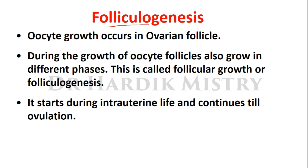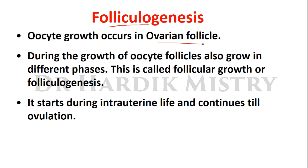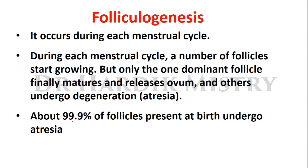Folliculogenesis: oocyte growth occurs in the ovarian follicle. During oocyte growth, follicles also grow through different phases — this is called follicular growth or folliculogenesis. It starts during intrauterine life and continues till ovulation, occurring during each menstrual cycle. During each cycle, a number of follicles start growing, but only one dominant follicle matures and releases the ovum; the others undergo degeneration known as atresia. About 99.9% of follicles present at birth undergo atresia.